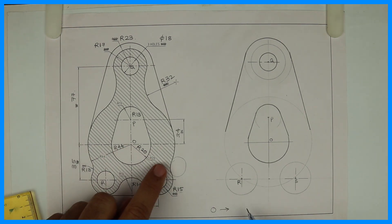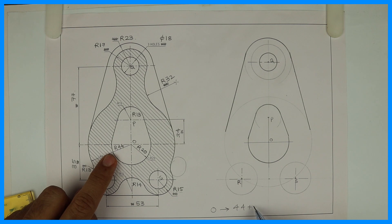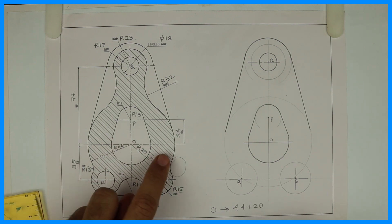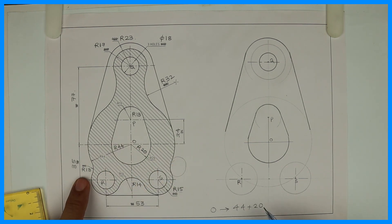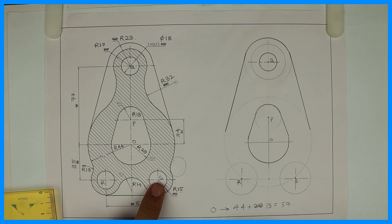So from O we will cut how much? 44 plus 13. So it is 57. And from S you cut 15 plus 13, which is 28.